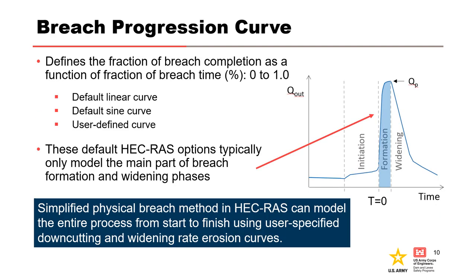The breach progression curve is used by HEC-RAS during the breach formation time to adjust the growth rate of the breach. By default, the breach progression is assumed to be linear between the breach initiation and the full breach size or full formation time, but an S-shaped wave or user-defined curve can also be selected. These default HEC-RAS options typically only model the main part of the formation and widening phases, capturing the main surge of breach formation in the hydrograph, which typically lasts no more than several hours. The duration on either end of the main surge can be minutes to hours to days. The simplified physical breach method in HEC-RAS can be used to define the entire breach process from start to finish, with downcutting and widening erosion rates as a function of velocity specified by the user. This method is used for modeling levee breaches.